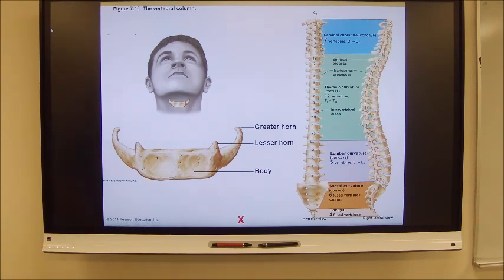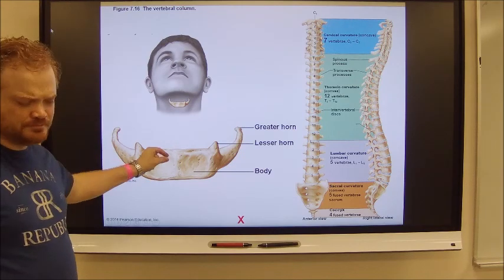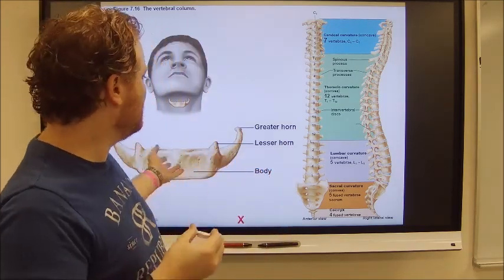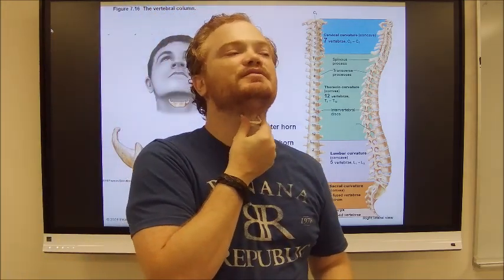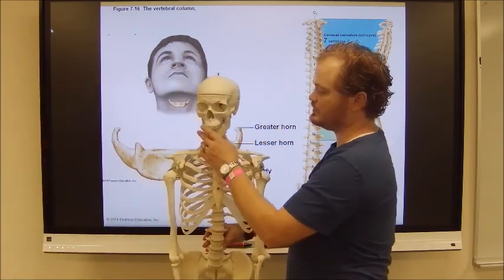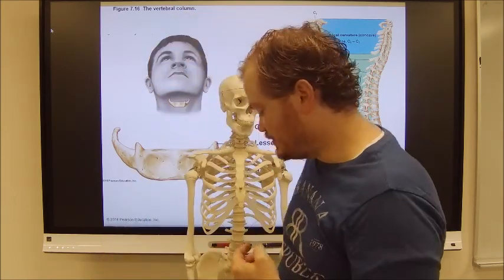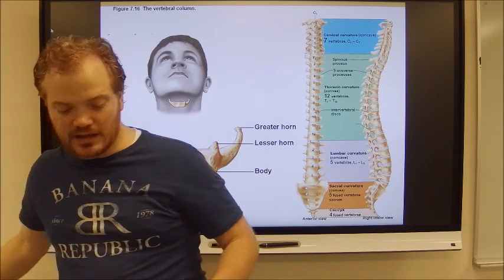The hyoid bone is here in the neck, right underneath your chin. If you feel your Adam's apple, just a little above that is a little lump — that's your hyoid bone. It's free-floating, not articulating with any other bones of the skeleton. It supports the top of the trachea so you can't collapse that upper tracheal passage, and it forms a moving base for the tongue.